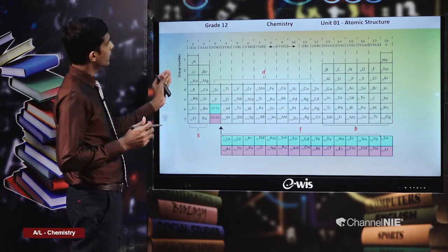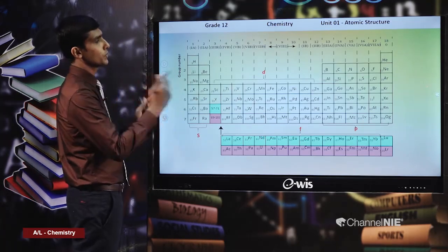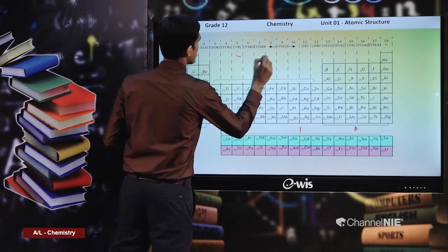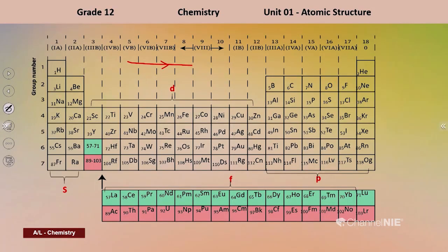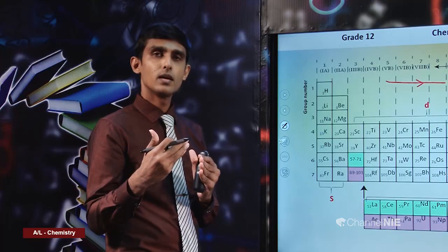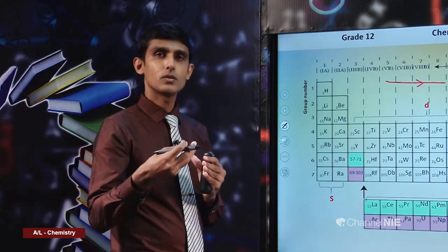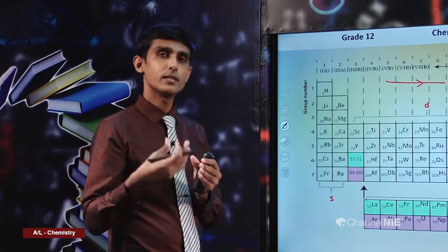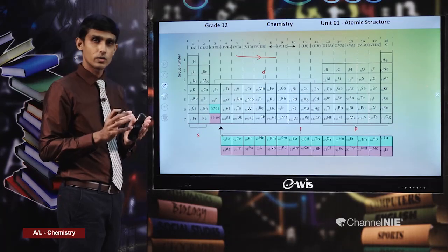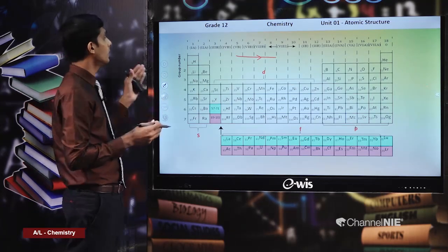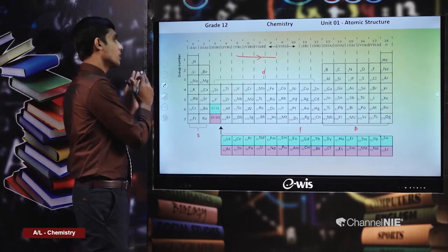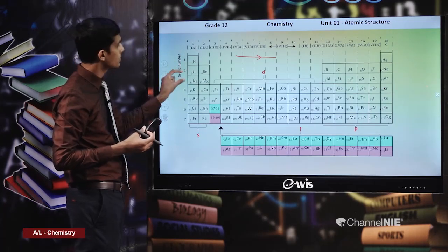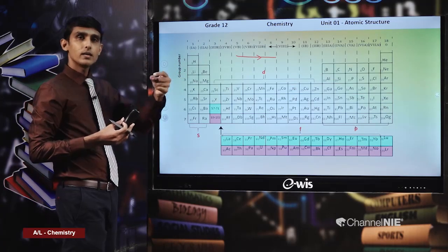One important thing is that among these main group elements, when you move across a period from left to right, the metallic character decreases and the non-metallic nature increases. Metals mainly react by removing electrons, meaning they have a higher ability to form cations. Their ionization energies related to removal of outer electrons are relatively low. When you move from left to right, you can see the valence shell is getting filled.